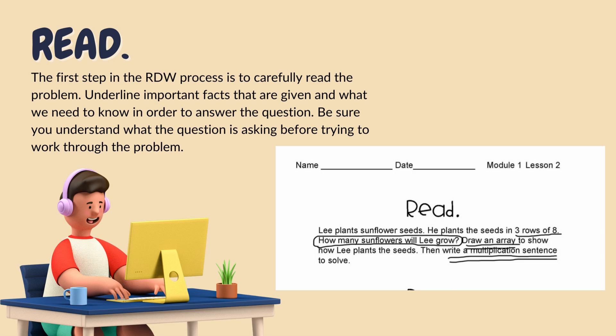So let's read this question together. Lee plants sunflower seeds. He plants the seeds in three rows of eight. I've underlined three rows of eight because that is the important information that will go into my math solution. How many sunflowers will Lee grow? I've circled this because this is the question that I need to answer.